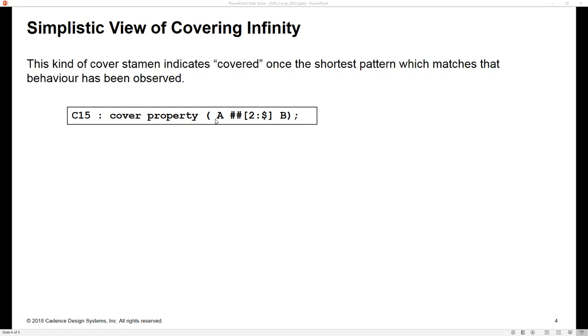A simplistic view of covering infinity from every version of the language reference manual would be something like this: cover property, and then A, and then two to an infinite number of cycles later we get B. Obviously this dollar is a synonym for infinity, but what does this really mean in this context?